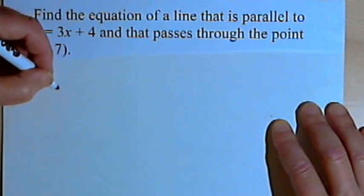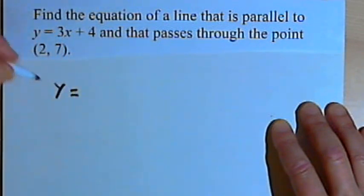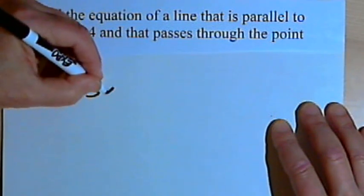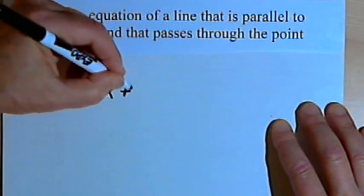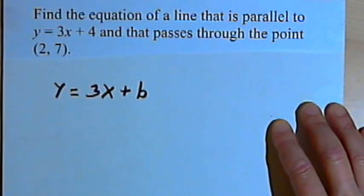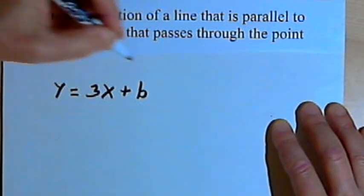So now I know this much about my equation. My equation is going to look like y equals 3x, but I don't know what the b part of it is. I don't know what the y-intercept is. Now the other thing I know is that it passes through the point (2, 7).